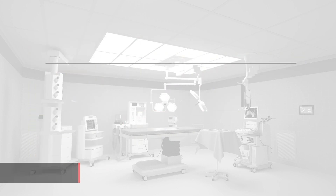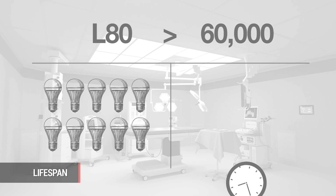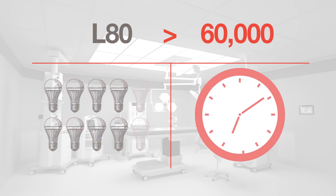The lifespan of an LED is measured as a function of brightness over time. L80 greater than 60,000 means that the lights will maintain at least 80 percent of their brightness for over 60,000 hours.